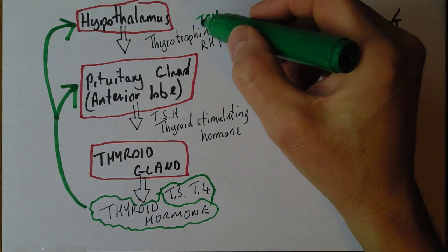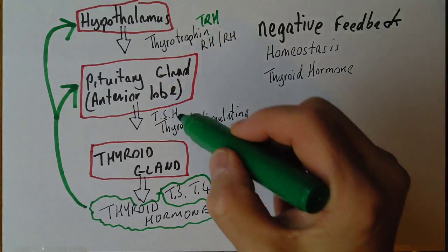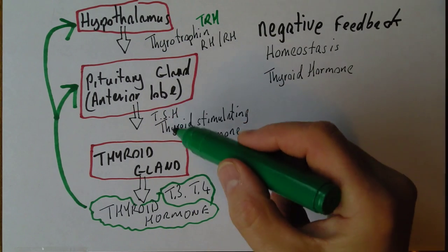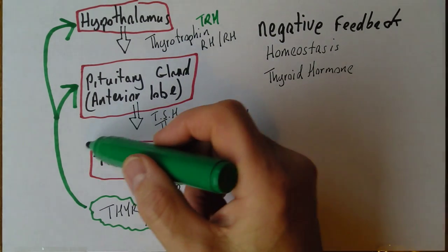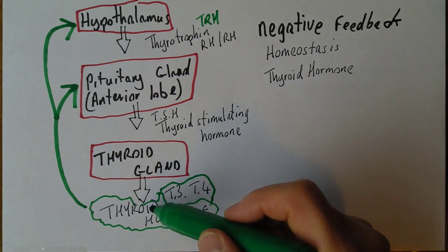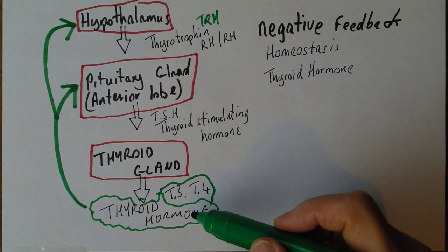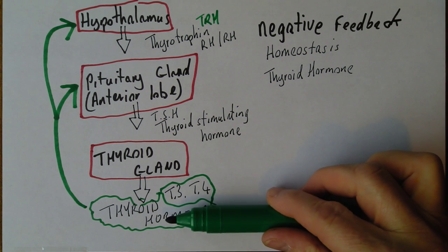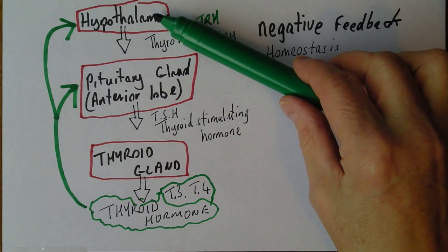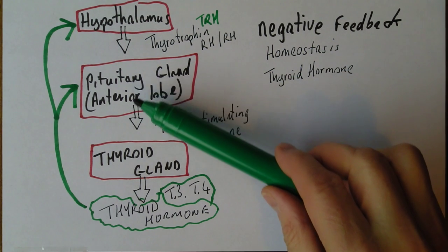If there's less thyrotrophin releasing hormone, there's going to be less stimulation of the anterior lobe of the pituitary gland, so there'll be less thyroid stimulating hormone. If there's less thyroid stimulating hormone, there's going to be less stimulation of the thyroid gland, and therefore less thyroid hormone produced. The levels in the blood will start to drop, which removes the inhibitory effect on the hypothalamus, which will then produce more thyrotrophin releasing hormone and restart that stimulating pathway.